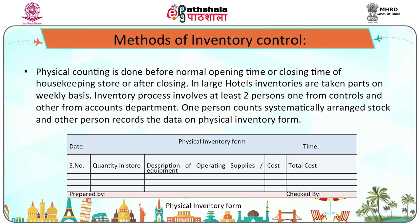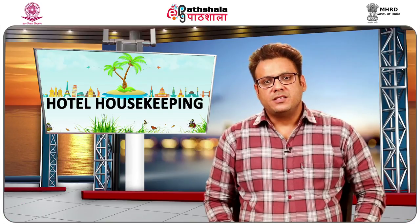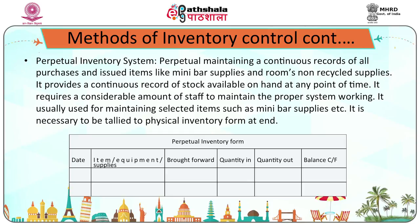One person counts the systematically arranged stock and the other person records the data on a physical inventory form. The second method is the perpetual inventory system. Perpetual inventory means maintaining a continuous record of all purchases and issued items like mini bar supplies and room non-recycled supplies. It provides a continuous record of stock available on hand at any time, but requires a considerable amount of staff to maintain properly. It is usually used for selected items such as mini bar supplies, and must be reconciled with the physical inventory form at the end.